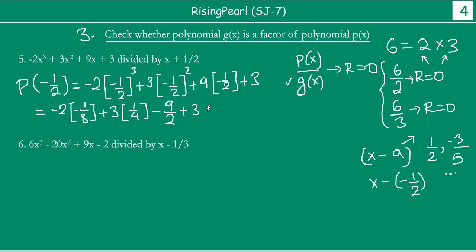If you multiply these: minus and minus become positive, 2 times 4 is 8. So this becomes 1/4 plus 3/4, which equals 1. Writing the plus term first: plus 3, minus 9/2. So 1/4 plus 3/4 is 1. Then you have 1 plus 3 which is 4, and then 4 minus 9/2.